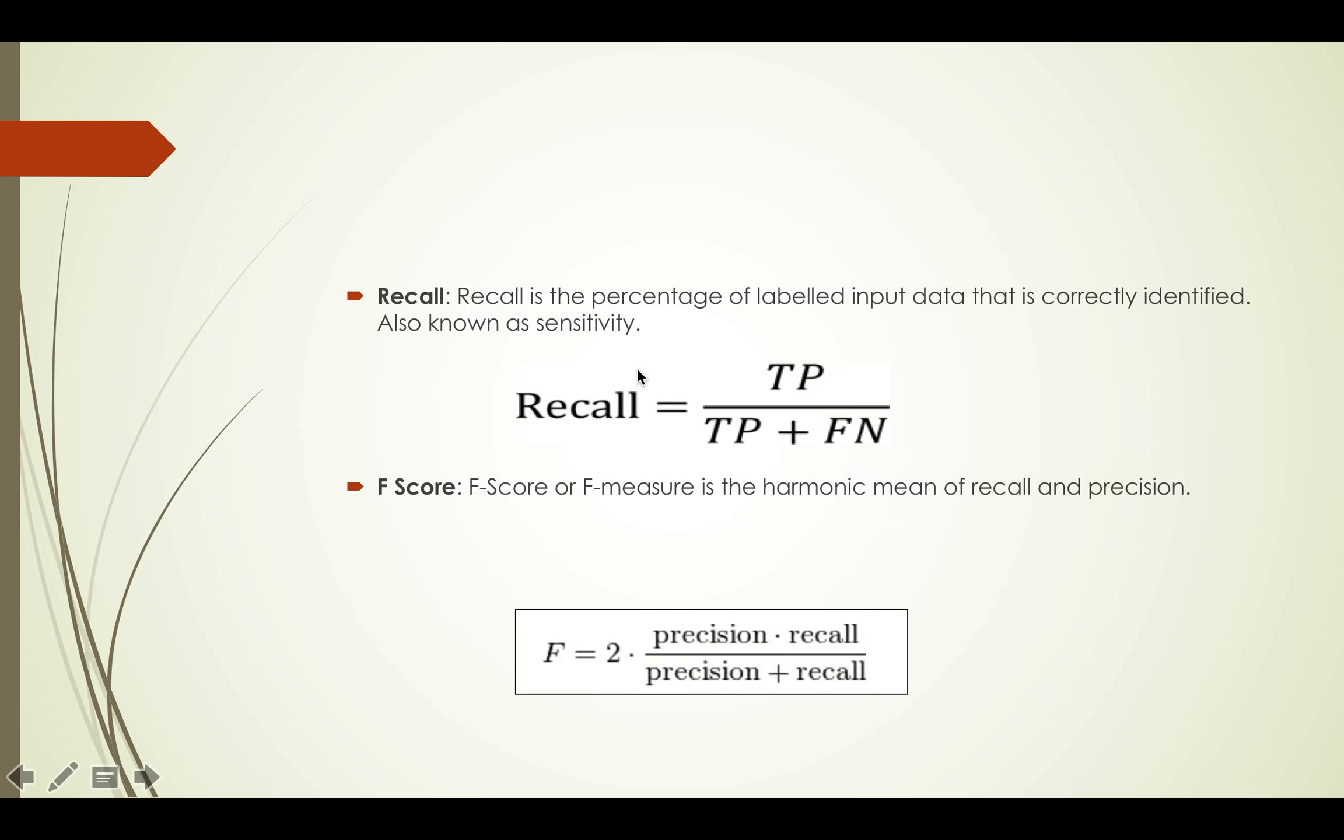Recall is the percentage of labeled input data that is correctly identified. It is also known as sensitivity. It is given by true positive upon the sum of true positive and false negative.